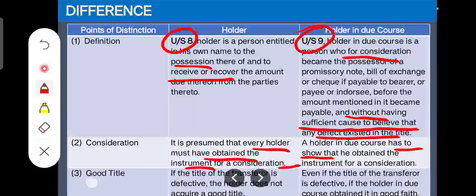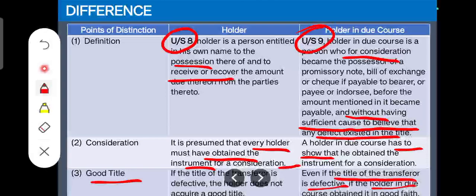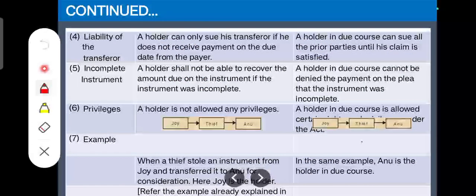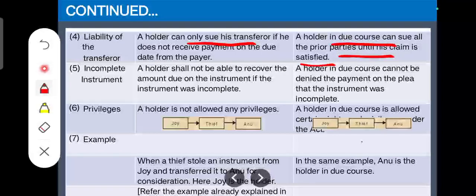Regarding good title: if the title of the transferor is defective, the holder will not get a good title. But in case of a holder in due course, even if the transferor's title is defective, the holder in due course will still get a good title. Regarding liability of the transferor: a holder can only sue the transferor, not earlier parties. But a holder in due course can sue all prior parties until the claim is satisfied. Prior parties means all previous endorsers — if the instrument was endorsed from A to B to C, the holder in due course can sue any of them.